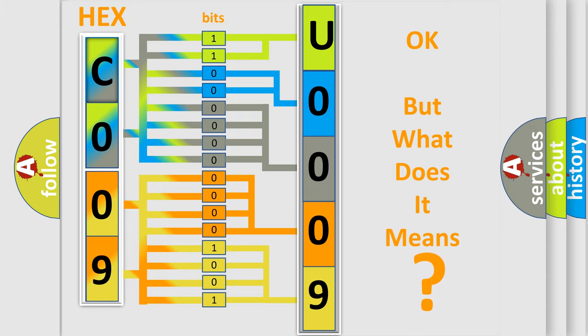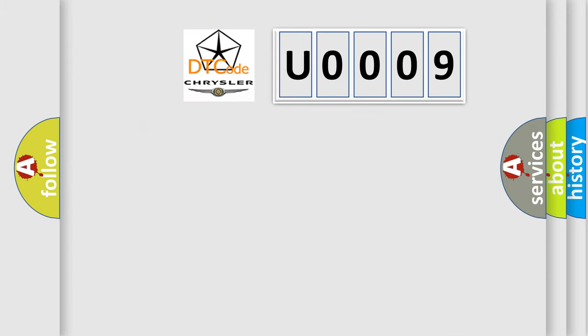The number itself does not make sense to us if we cannot assign information about what it actually expresses. So, what does the diagnostic trouble code U0009 interpret specifically for Chrysler car manufacturers?